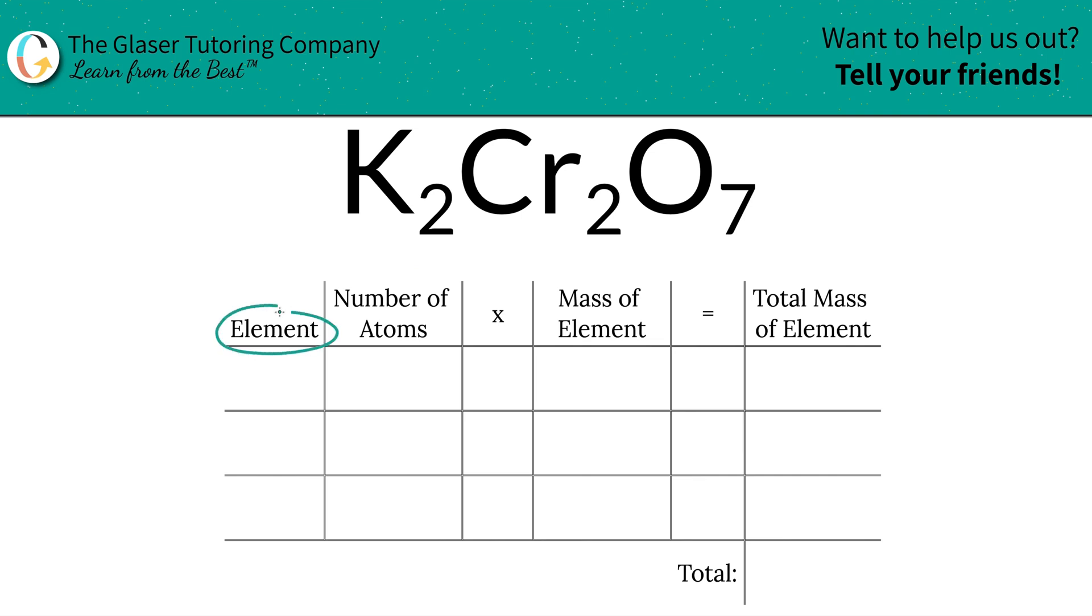First, I want to write down the elements we see: potassium, chromium, and oxygen. Next, write down the number of atoms using the subscripts—that's two atoms of potassium, two atoms of chromium, and seven atoms of oxygen.